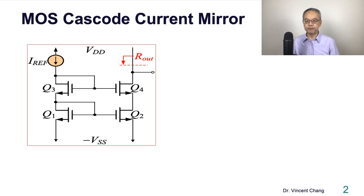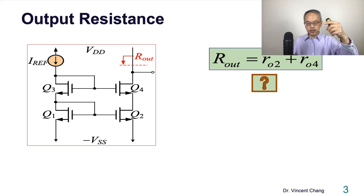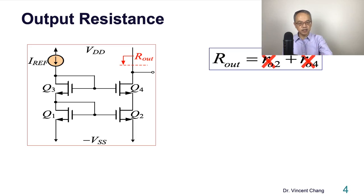MOS cascode current mirror. In part one, toward the end of the video, I asked you this question: is this correct? Intuitively, instinctively, by inspection, do you think this is correct? Some people think the first layer, if we only have the basic current mirror without the second one, the output resistance is R_O2. By cascoding or piggybacking a second layer on top of the first layer, it's the series combination of the two resistances. Let me ask you again, is this really a series combination? The word series can only be used for two terminals, and this is three terminals. So this is definitely wrong.